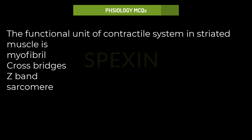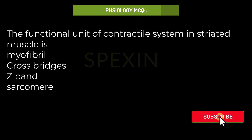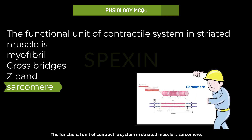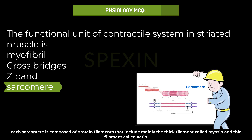The functional unit of the contractile system in striated muscle is: myofibril, cross bridges, Z-band, or sarcomere? The functional unit of the contractile system in striated muscle is the sarcomere. Each sarcomere is composed of protein filaments — mainly thick filaments called myosin and thin filaments called actin.